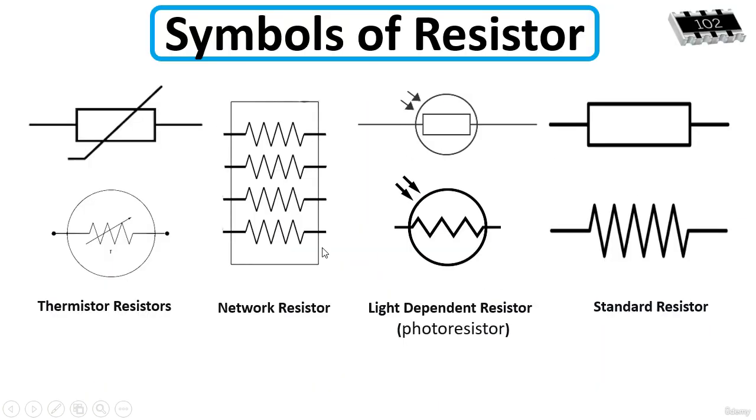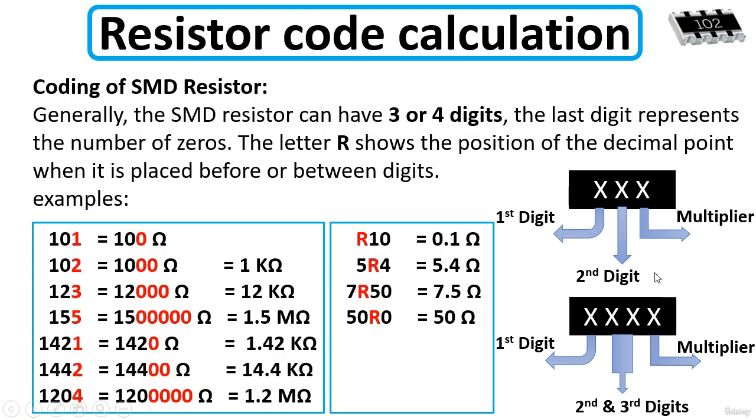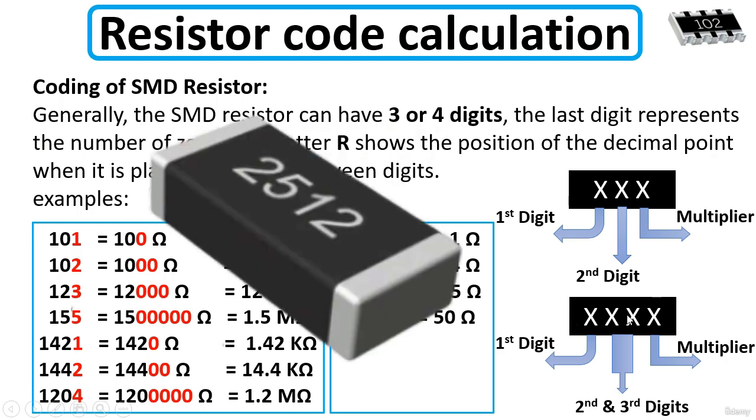All these samples are for resistors. Generally, you can find two kinds or two types of resistors. You can find a resistor with three digit or four digit.